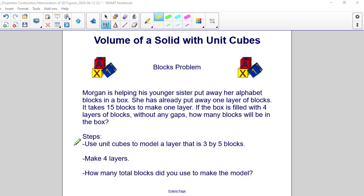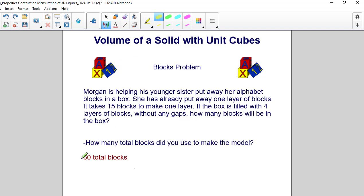We would use unit cubes to model a layer of blocks, and we find that along the bottom we would have a layer of blocks three by five. Three across, five back. So three by five makes 15 blocks. Then we would make four layers of blocks. So how many total blocks did you use to make the model? There would be a total of 60 blocks.